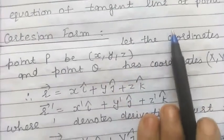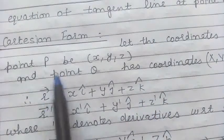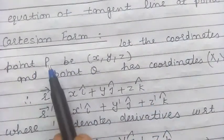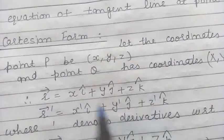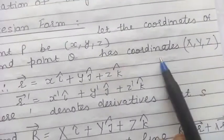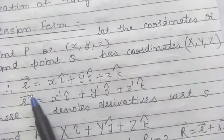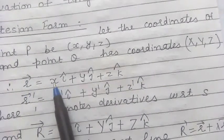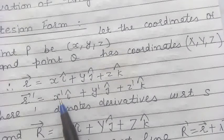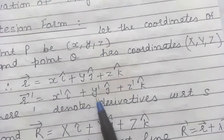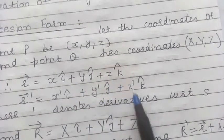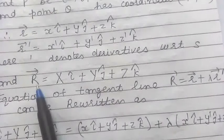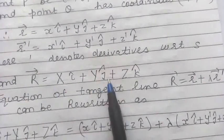Now let us derive the Cartesian form of the equation of the tangent line. Let the Cartesian coordinates of point P be x, y, z and the coordinates of point Q be capital X, capital Y, capital Z. The position vector of P is xi + yj + zk. Differentiating with respect to s, the derivatives are x' = dx/ds, y' = dy/ds, and z' = dz/ds. The position vector of Q is Xi + Yj + Zk.